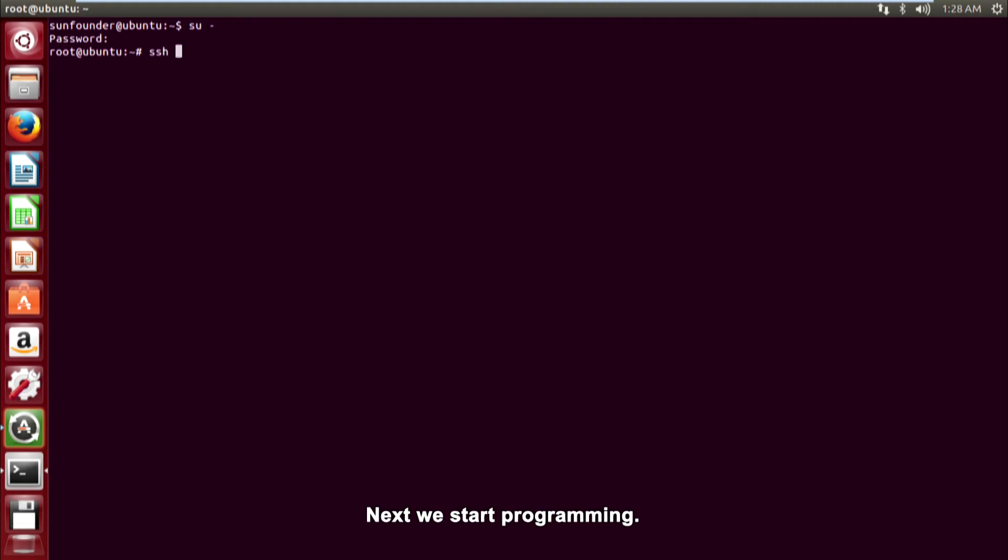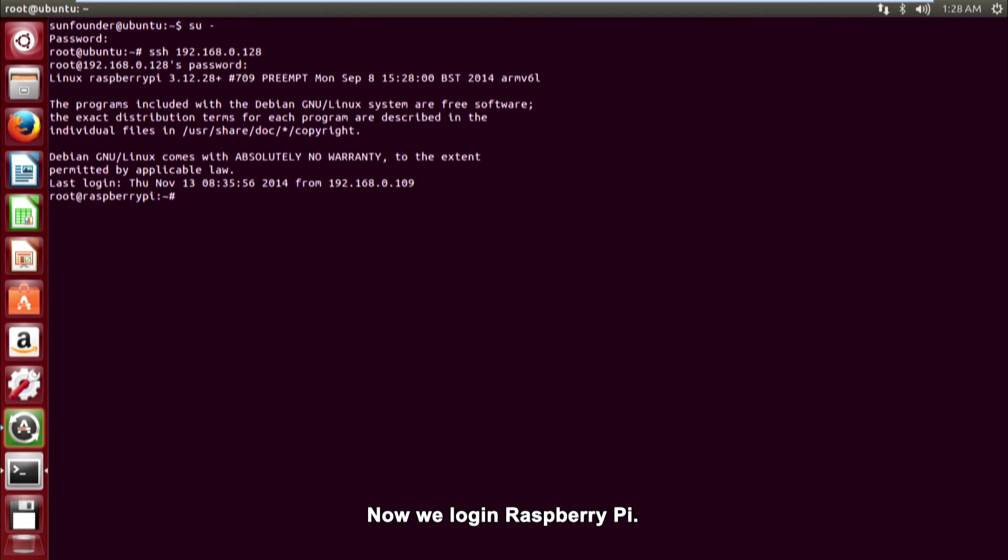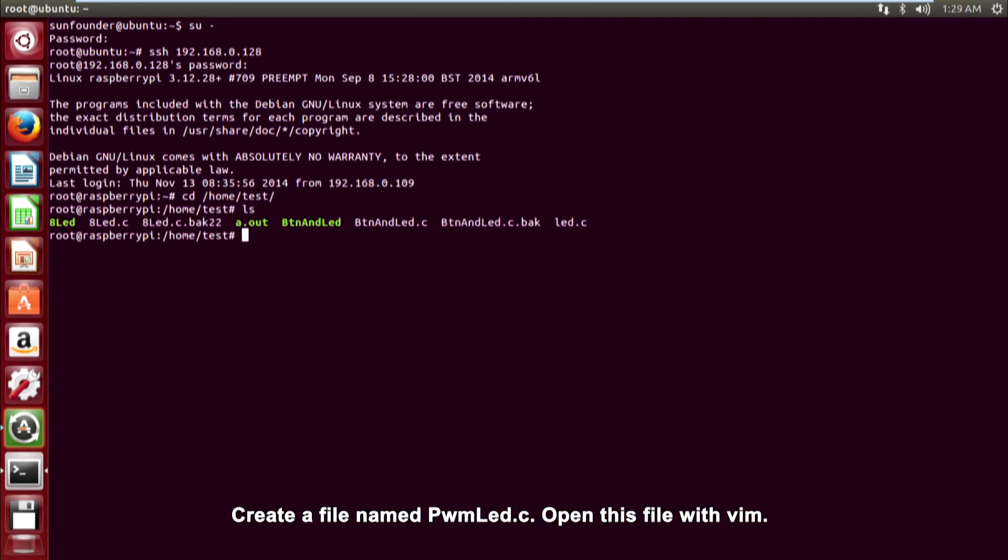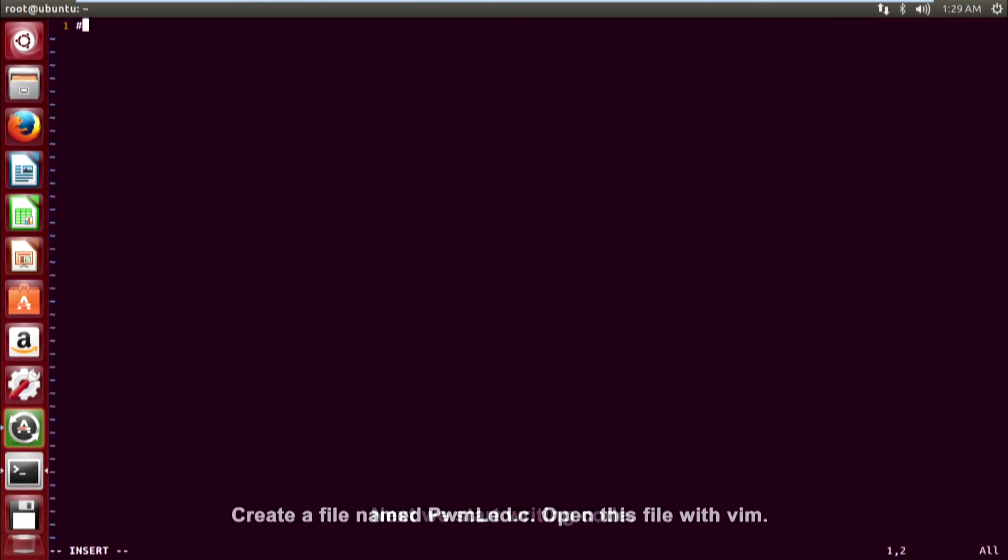Next, we start programming. Now, we log in Raspberry Pi. Enter into test directory at home. Create a file named pwmled.c. Open this file with vim. Next, we start writing code.